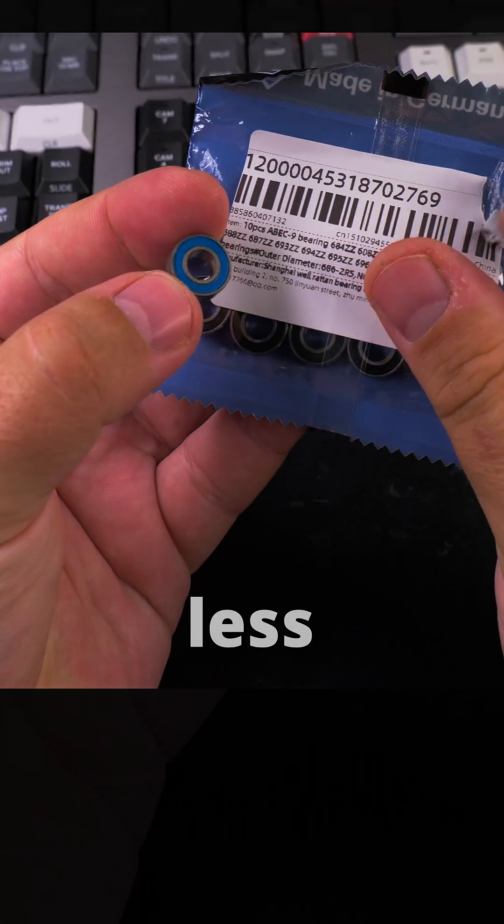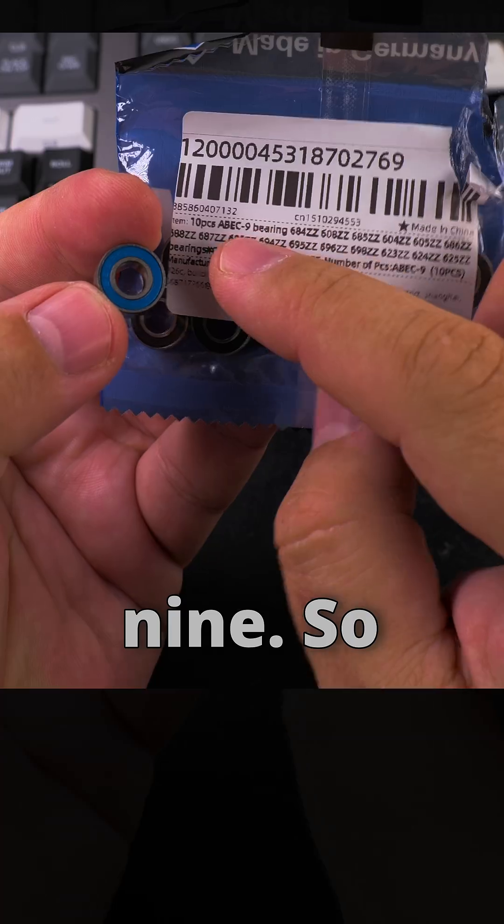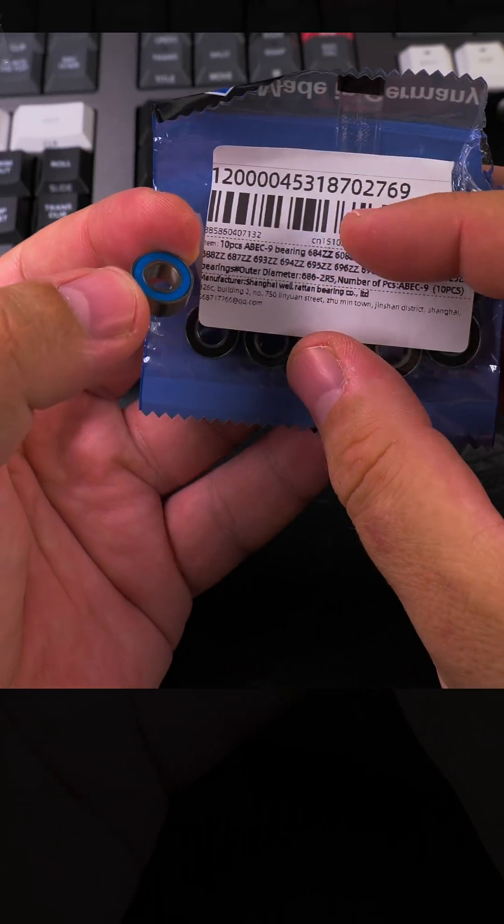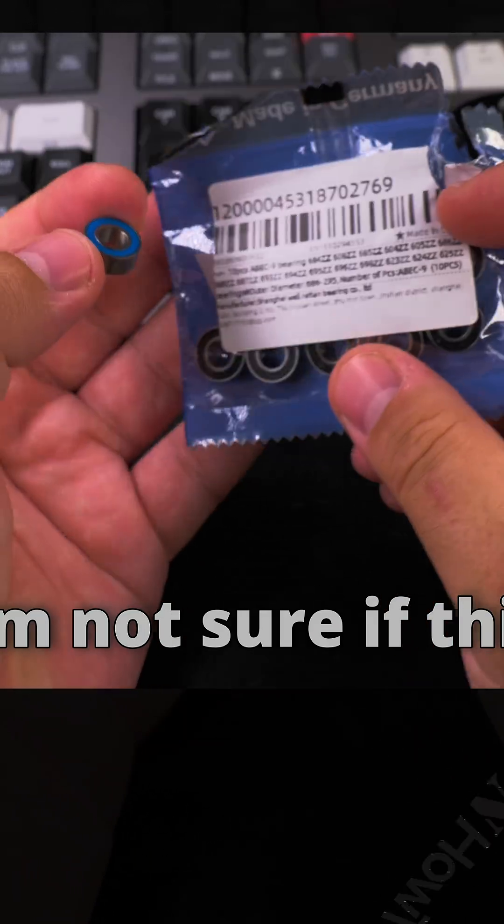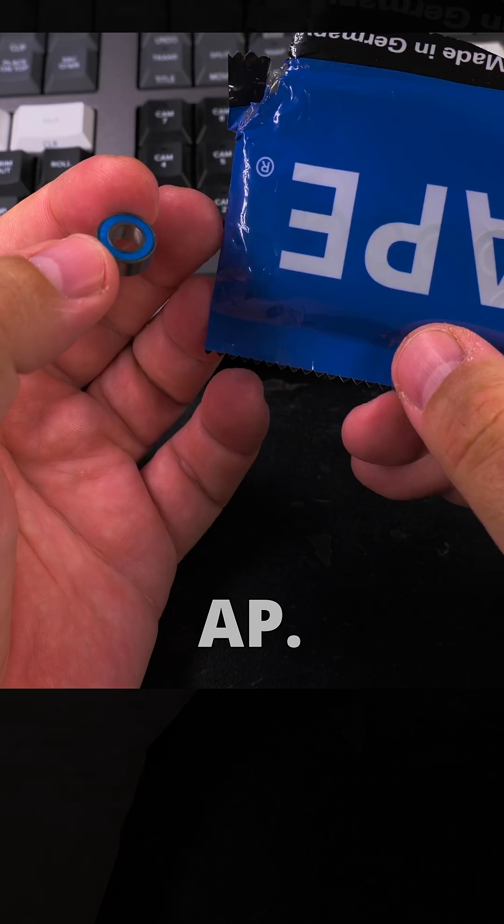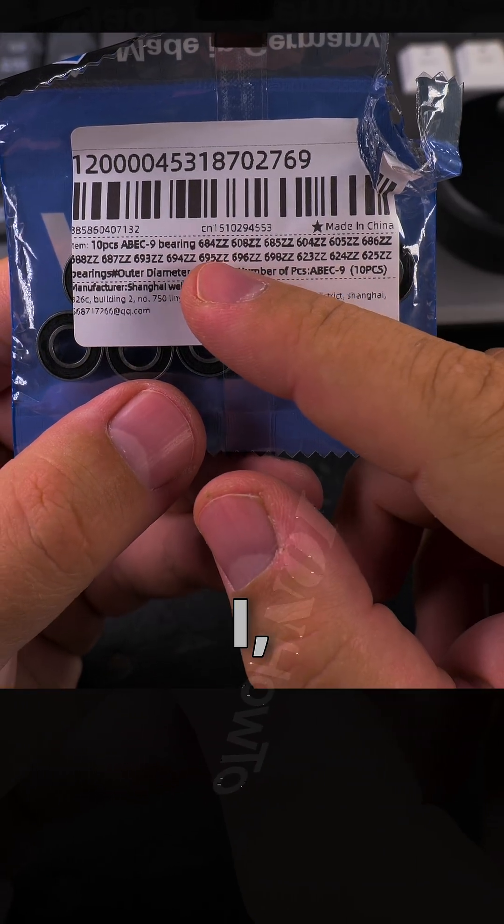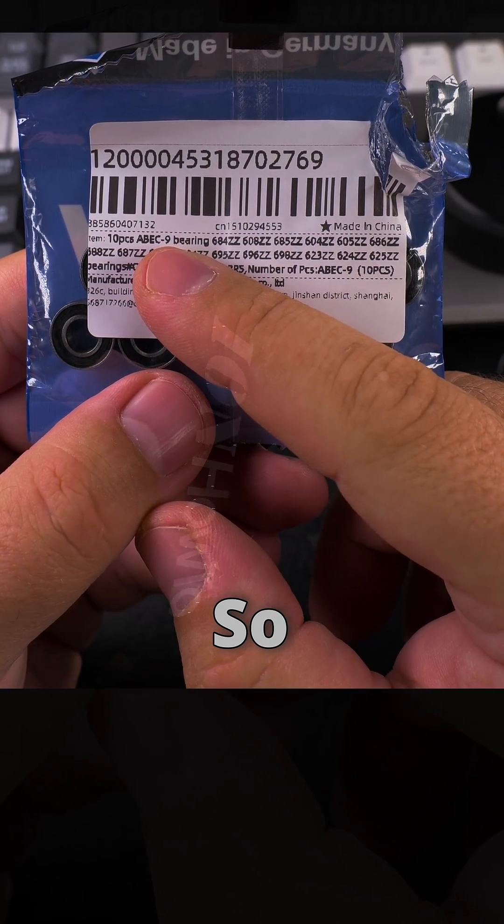This ABEC 7 is a less precise version than ABEC 9. So these ones, I got them from AliExpress, all of these. So I'm not sure if this is original, this APE. I'm not sure if it's original or if it's even a real brand, but these ones are supposed to be a bit better.